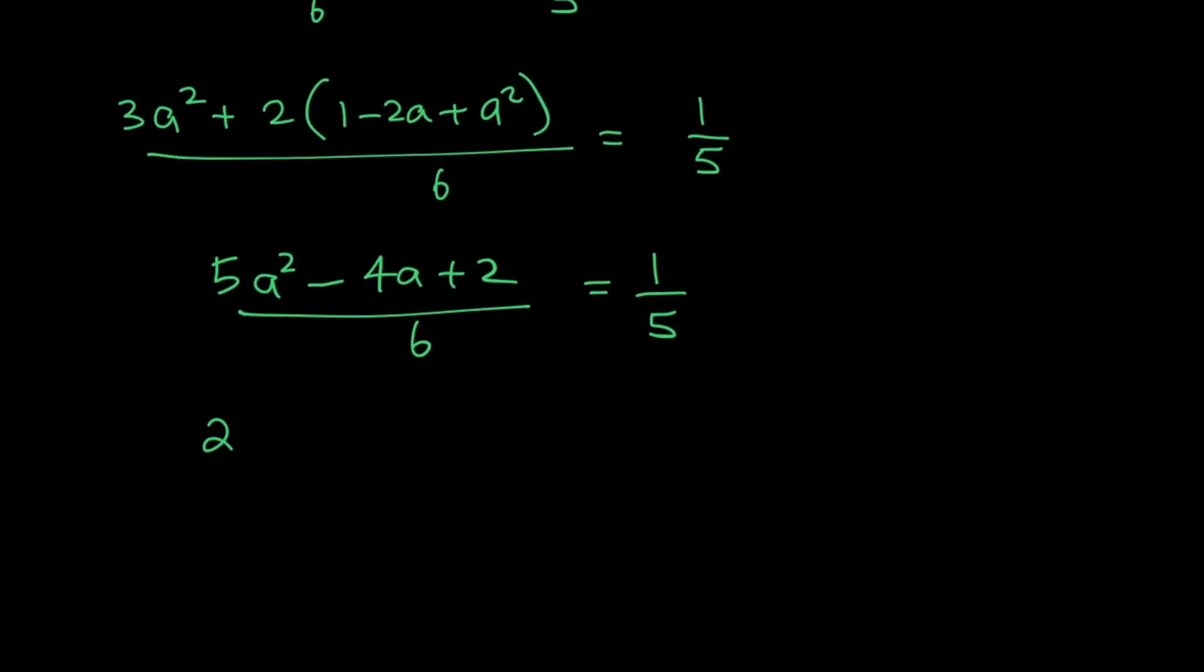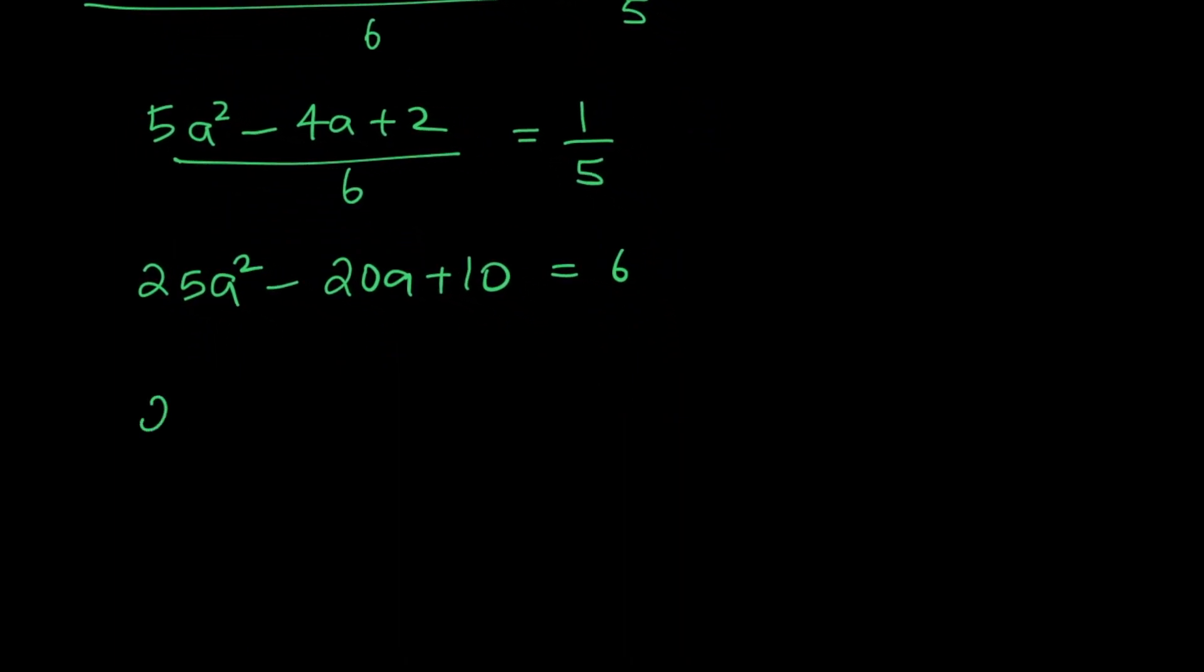So 25a square minus 20a plus 10 is equal to 6. Now 25a square minus 20a plus 4 is equal to 0. Now this is an interesting equation because it's a perfect square. So this is 5a minus 2 the whole square. So from this we get a is equal to 2 by 5.